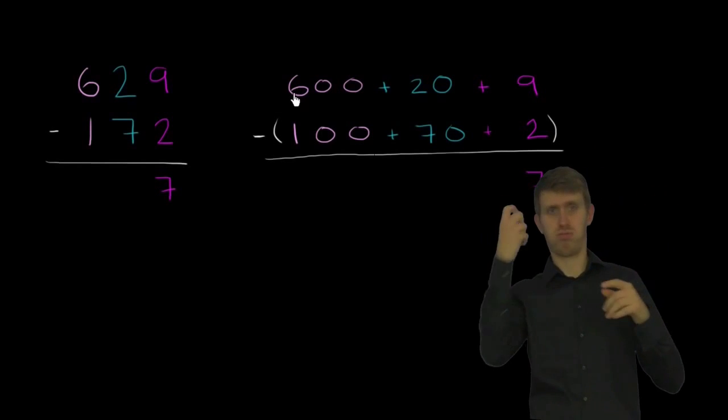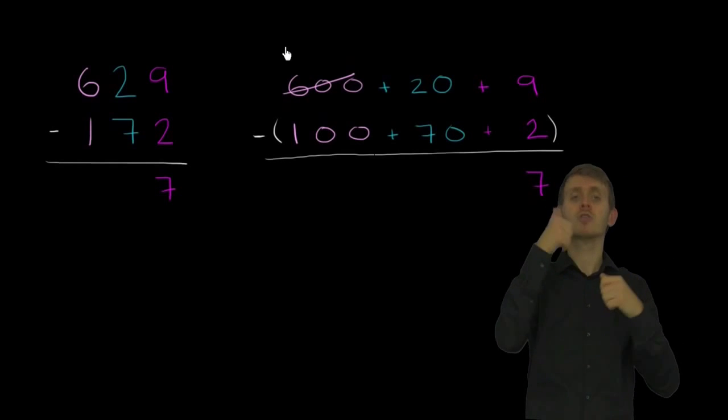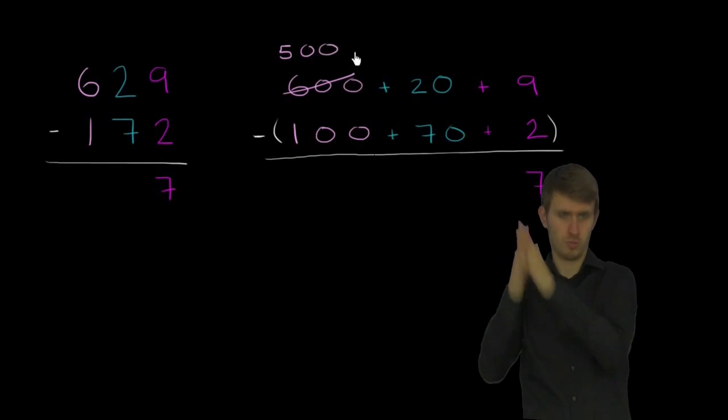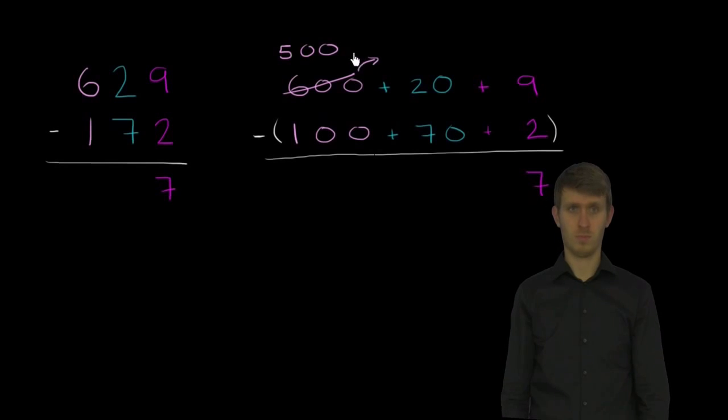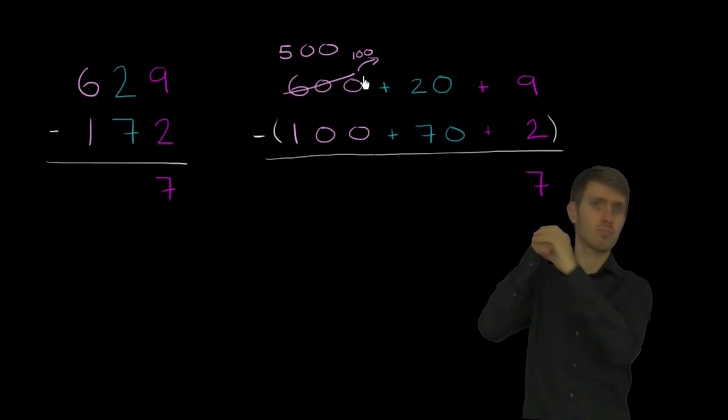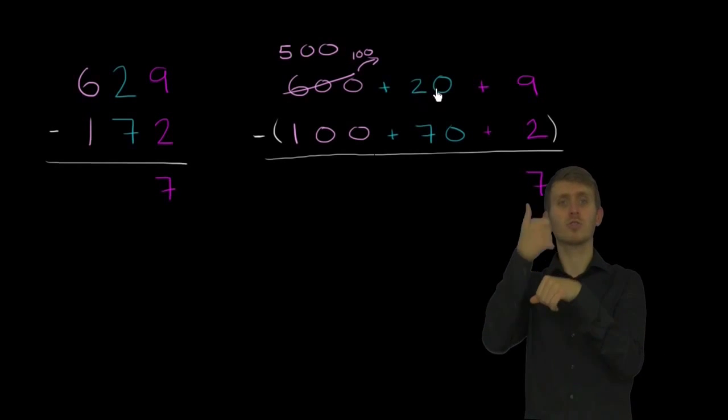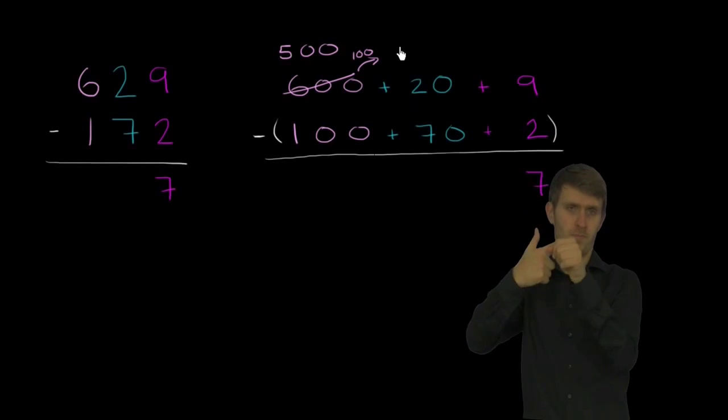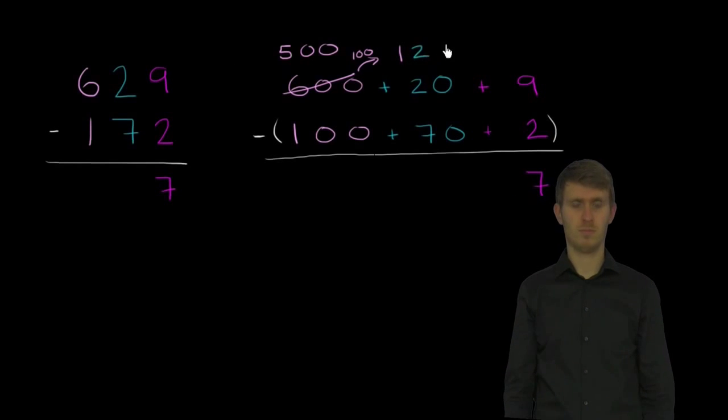So why don't we take 100 from the 600, so that becomes 500, and give that 100 to the tens place. If we give that 100 to the tens place, what is 100 plus 20? Well, it's going to be 120.